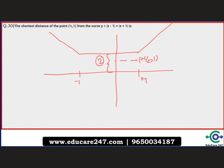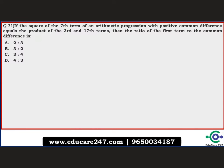The next question: find the shortest distance of the point (1/2, 1) from the curve y = |x−1| + |x+1|. By placing x = 0 and y = 0, you can draw this graph easily. The curve has a flat section at y = 2. The point (1/2, 1) lies below this, and since the flat portion is at height 2, the shortest distance from the point up to the curve is 2 − 1 = 1. The correct answer is 1.